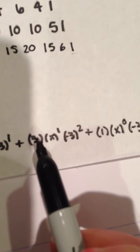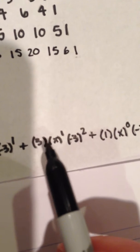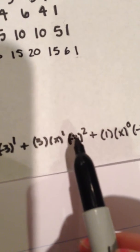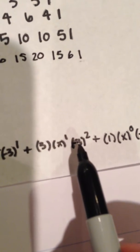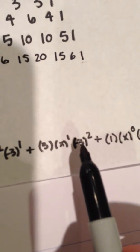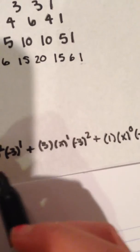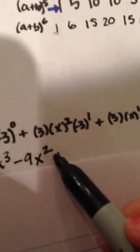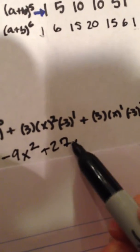Our next term, also multiplied by three, is 3x times negative three to the second power. So that's negative nine, or positive nine, which will make it plus 27x.